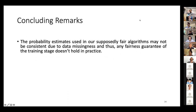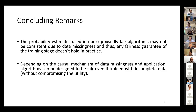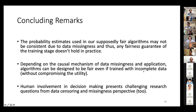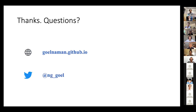To conclude: probability estimates used in supposedly fair algorithms may not be consistent due to data missingness, so fairness guarantees from training do not hold in practice. Depending on the causal mechanism of data missingness and the application, we can sometimes design algorithms to be fair even when trained with incomplete data, and often without compromising utility. Finally, human involvement in decision-making presents challenging research questions from a data censoring and missingness perspective — we now have a formal result showing it does make things hard. Thank you, I'll take any questions.